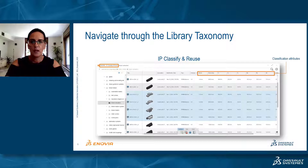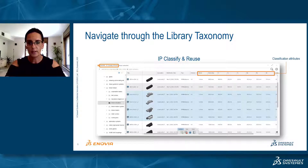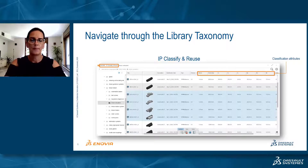The first thing you can do is easily navigate through the classification taxonomy with a graphical tree-based browser. As you walk through the hierarchy, the classified components for the selected level are listed on the left side, along with the relevant classification attributes on the right side of the screen. This is available with the IP Classify and Reuse application, which is a dashboard application coming with the collaborative industry innovative role that everybody gets.